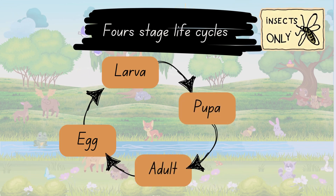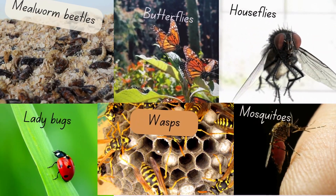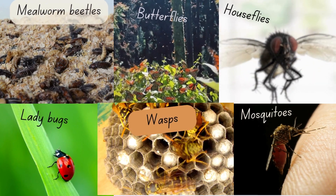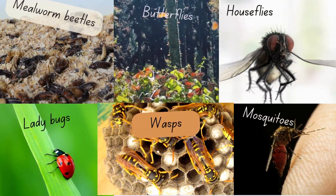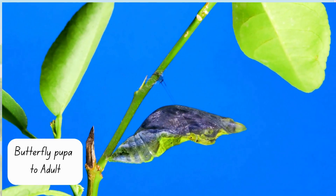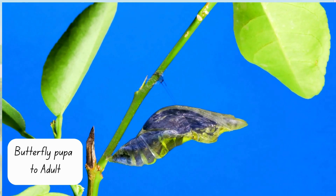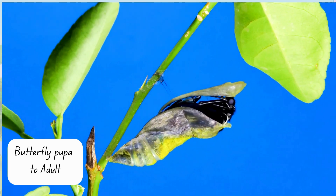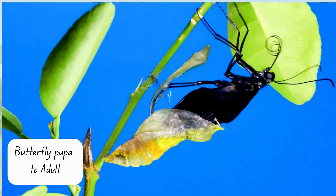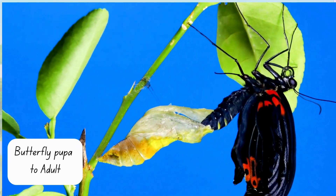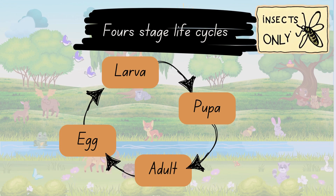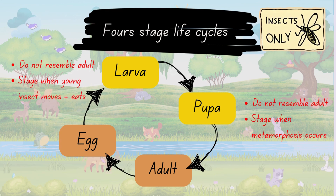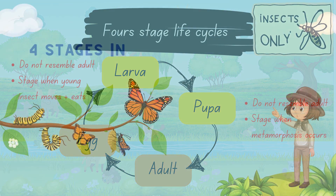Insects which have four stages are mealworms, butterflies, houseflies, ladybugs, wasps, and mosquitoes — all have four stages in their life cycles. Only insects with larva and pupa have four life cycle stages.